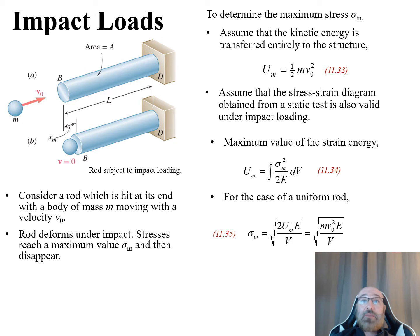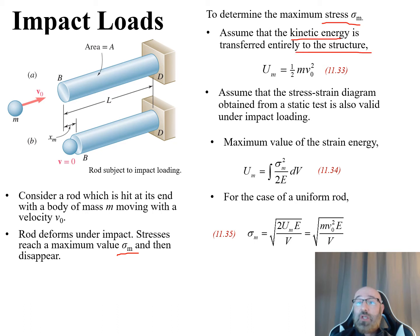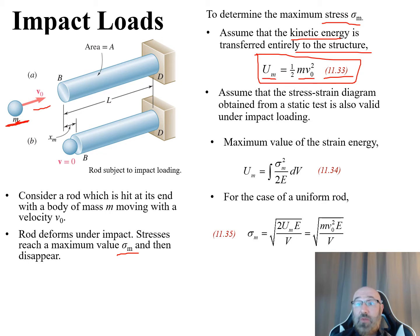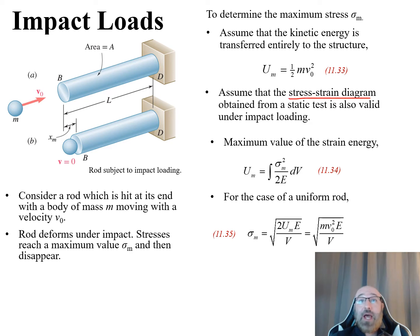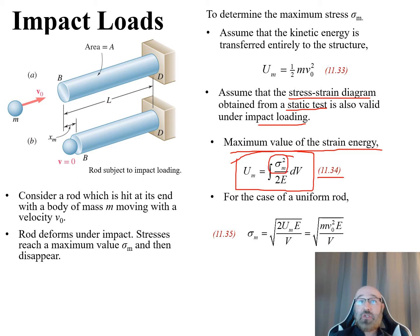As the rod deforms under impact and we get maximum stress σ_M, we ask how we can determine this. To find σ_M, we first assume that kinetic energy is transferred entirely to the structure. From equation 11.33, we have U_M equal to one-half M V₀², where M is the mass coming in at velocity V₀.